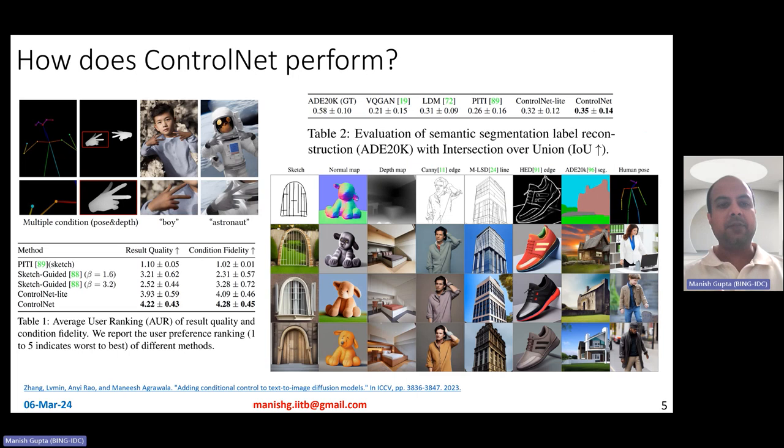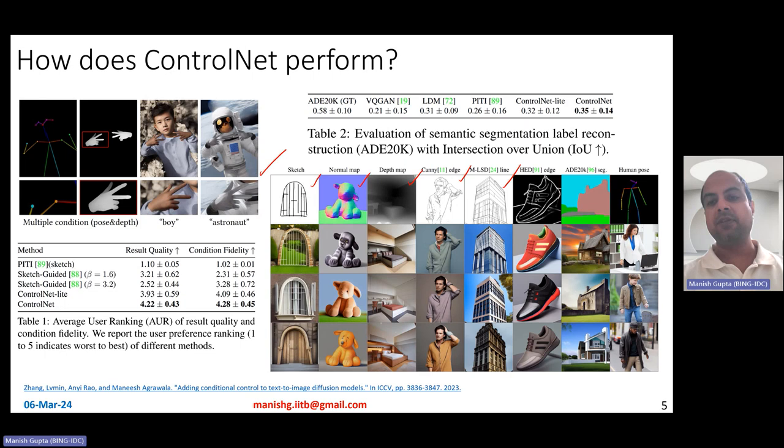How does ControlNet perform? Here are some case studies. You can give various kinds of conditioning information: a sketch, a normalization map, a depth map, Canny edges, MLSD line sketches, HED sketches, segmentation maps, human pose maps, and so on. These are the kinds of images that get generated — images which follow the input conditioning information at super high quality.